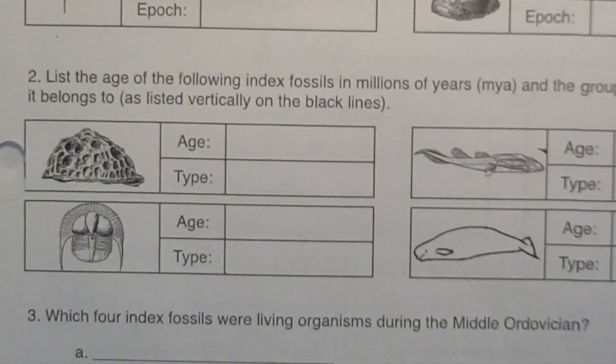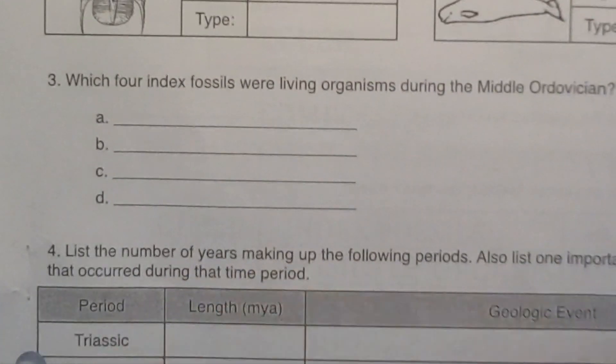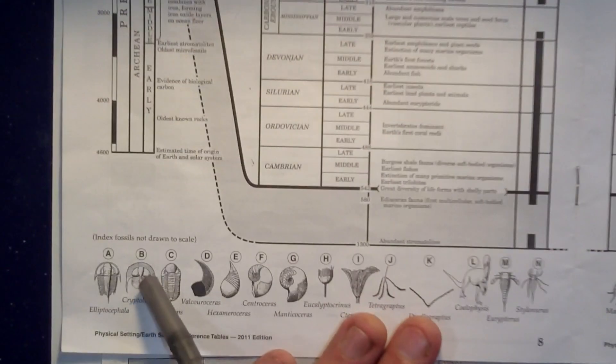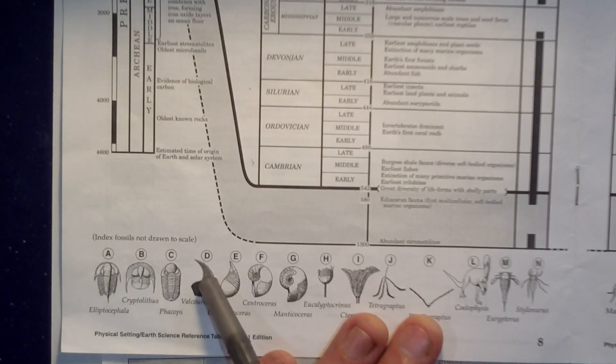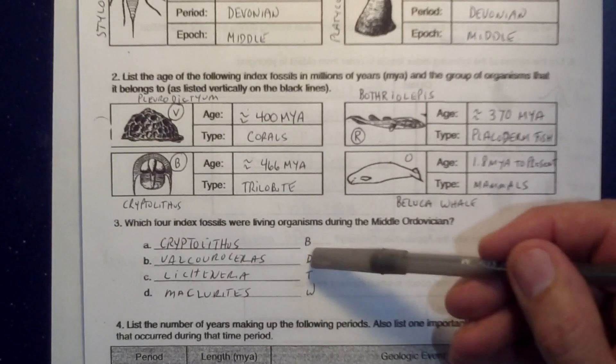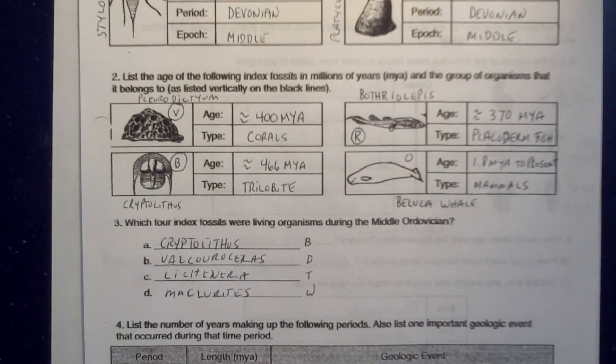Question number three: which four index fossils were living during the Middle Ordovician? Here's Middle Ordovician — I can see B, D, T, and W. So I need to go to the bottom and write down the names of those organisms: B, D, T, and W.